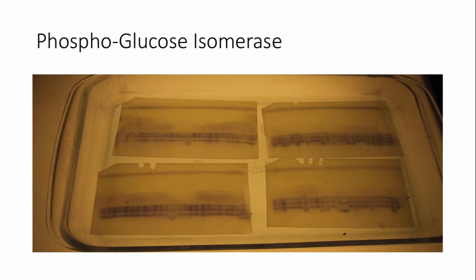So this is what allozymes look like. This is phosphoglucose isomerase, a core Krebs cycle enzyme. We have it. This happens to be from a plant. Basically all plants, animals, and fungi, and aerobic bacteria have phosphoglucose isomerase. And you can see that there are multiple copies.